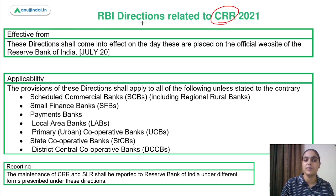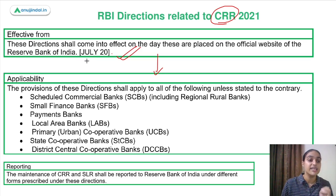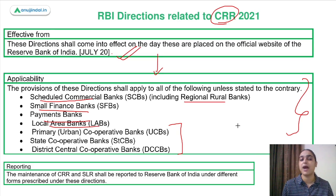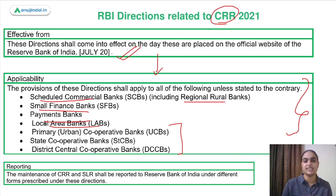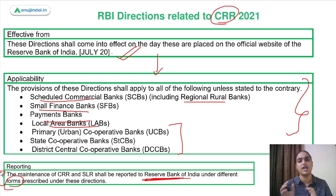These directions will be applicable from the day they are put up on the website. On July 20th these directions were published and since then they are applicable to certain entities: scheduled commercial banks, regional rural banks, small finance banks, payment banks, local area banks, and different cooperative banks like primary urban cooperative banks, state cooperative banks, and district cooperative banks. These banks must also report to RBI through prescribed forms confirming they are adhering to CRR and SLR norms.